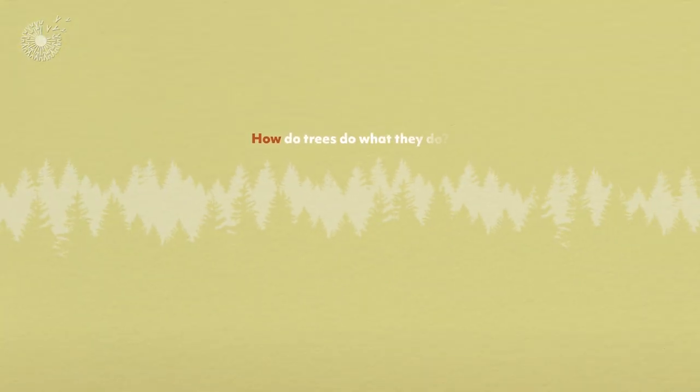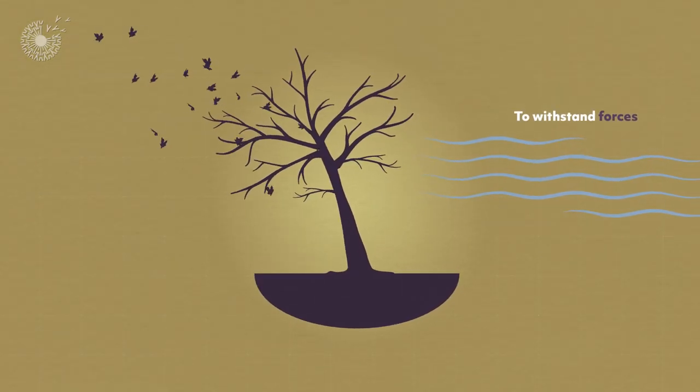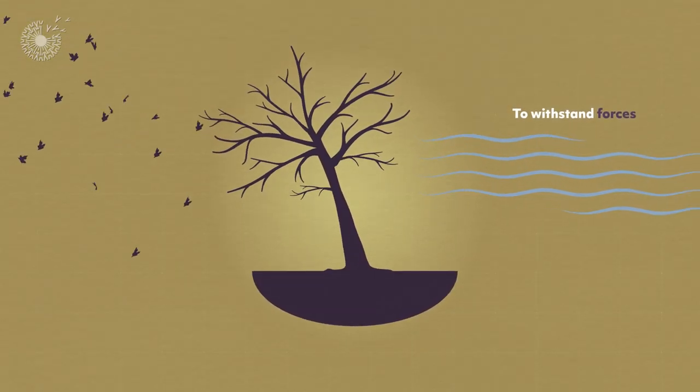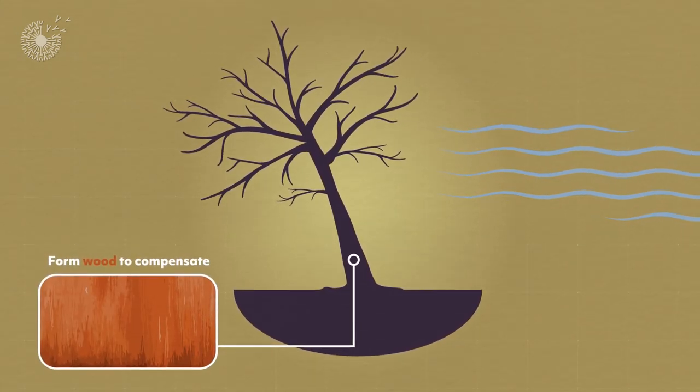So how do trees do what they do? To withstand forces that would break them, trees have evolved a strategic way of growing. They form their wood to compensate for those forces.